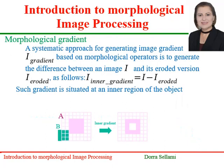A more important operator useful in object segmentation is the morphological gradient operator. A systematic approach for generating the image gradient based on morphological operators is to generate the difference between an image and its eroded version. Such a gradient is situated at an inner region of the object. The figure above illustrates the inner gradient generation. The size of the gradient here is of one pixel.